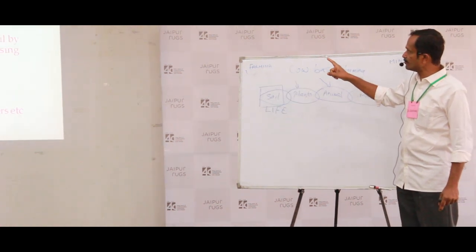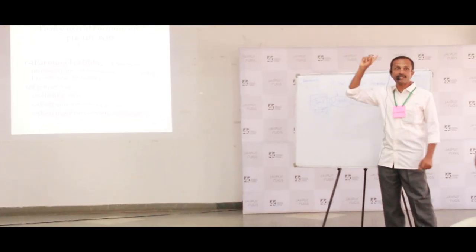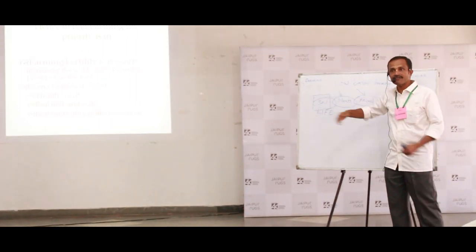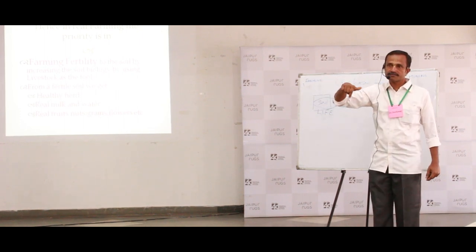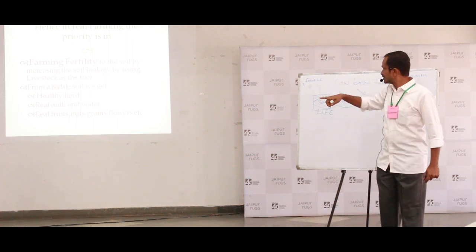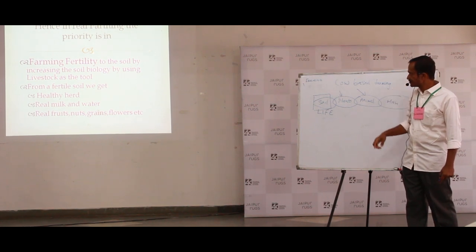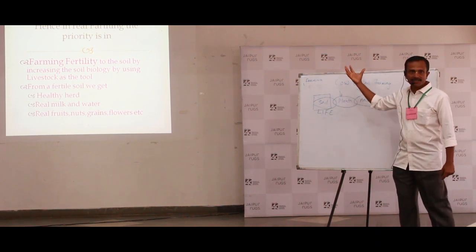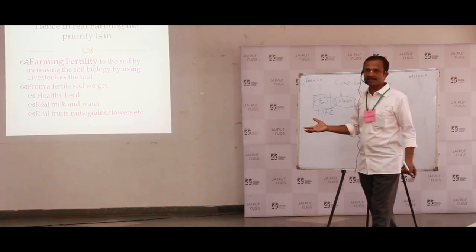This soil biology is declining because you have separated — as you saw — the cow from the land. To bring back life, you have to bring in livestock. For farming fertility, to increase soil fertility, we need to use livestock. Then you will have good soil, good plants, good fruits, good vegetables, animals giving good milk. And then you will become healthy. That is what the organic principle is about.